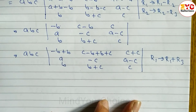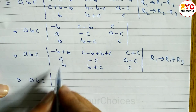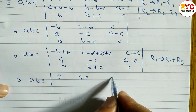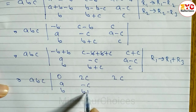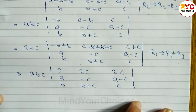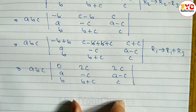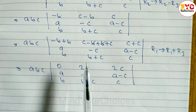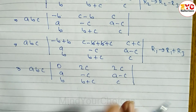Now let's check: after R1 → 2R1 + R3, row 1 is [0, 2c, 2c]. Row 2 is [a, b−c, b+c]. Row 3 is [b, a−c, c]. We need two elements to be zero. We already have one zero. When we subtract the first column from the second column, 2c minus 2c gives zero.